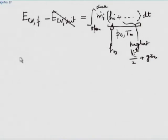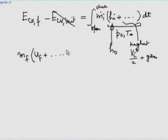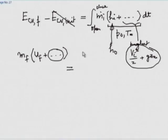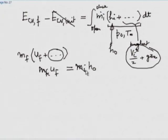The final energy is m_f times u_f (neglecting final-state kinetic and potential energy). On the right-hand side, neglecting inlet KE and PE, it simplifies to m_i times h0. From conservation of mass, m_f equals m_i, so those cancel, and we simply end up with u_f equals h0.